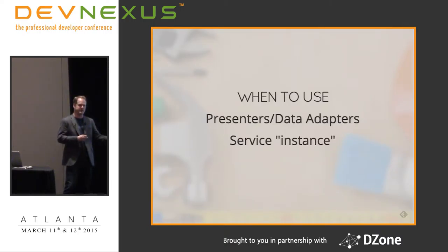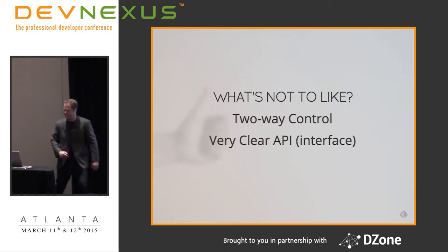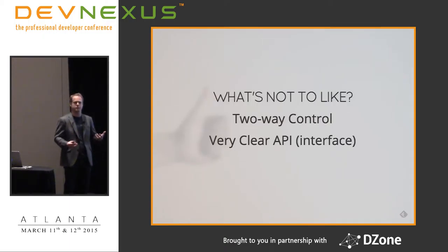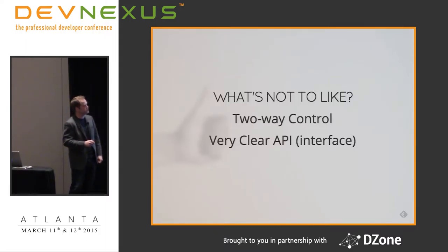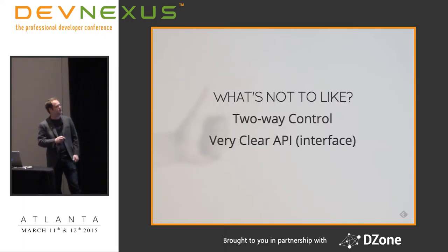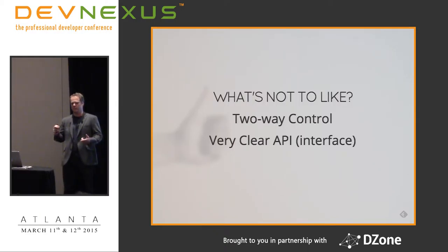The strength of the delegation pattern is decoupling: you can register and handle events in a different layer. It's great for data adapters, view presenters, and lots of Android and iOS code is built around this pattern. One key advantage is two-way control - in almost every other async pattern I register a callback and handle it at some future time without being able to talk back, but delegation lets you do that.